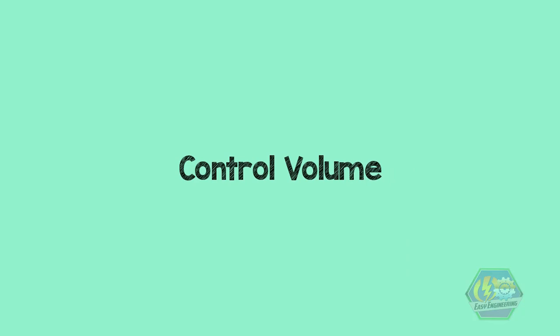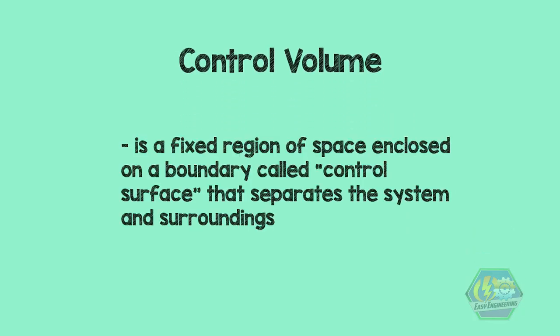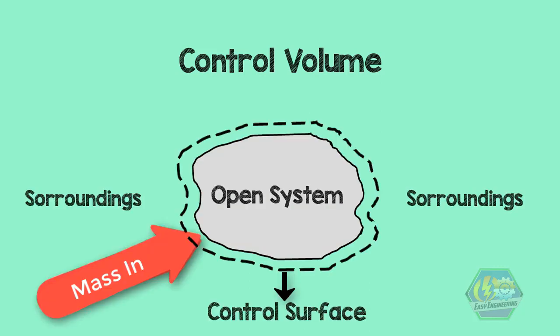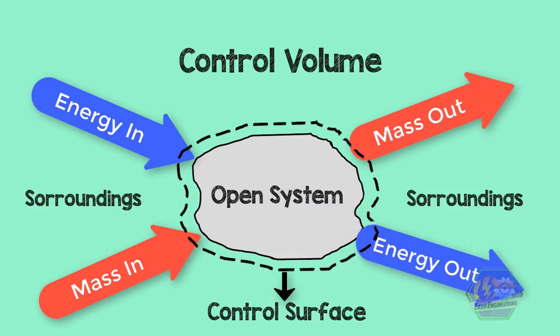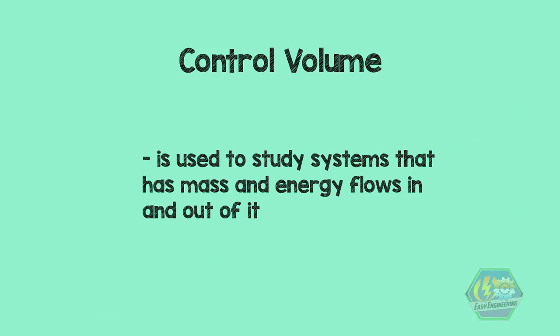Good day, young engineers and scientists. Today we are going to talk about a wonderful topic: the control volume. A control volume, by definition, is a fixed region of space enclosed by a boundary called the control surface, that separates the system and surroundings. A control volume acts like an open system where mass and energy flow in and out of it.